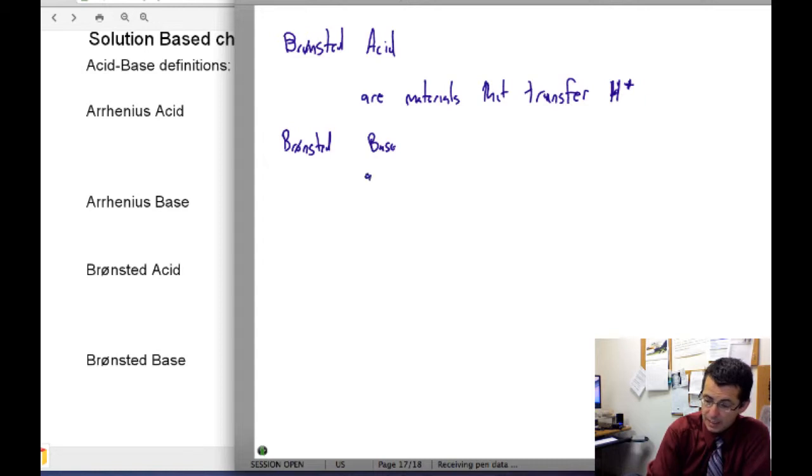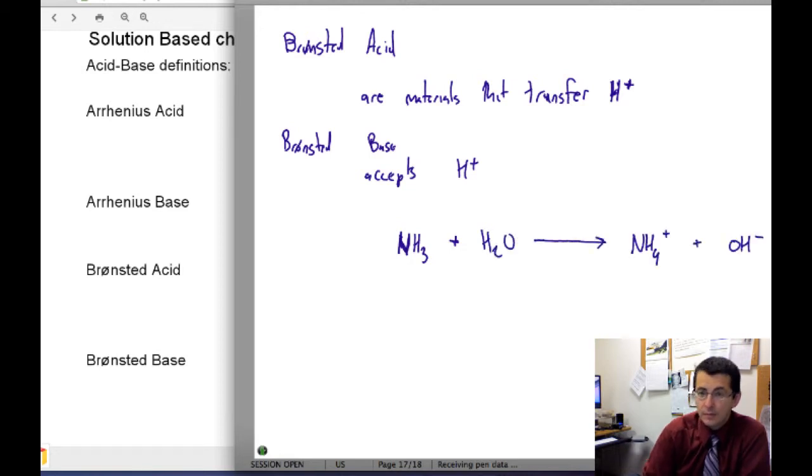If we take a look at our NH3 in water, we have to look at both sides of the equation. We see that the H2O donates a proton to the ammonia. This one acts as the acid. This material acts as the base because it accepted the proton.